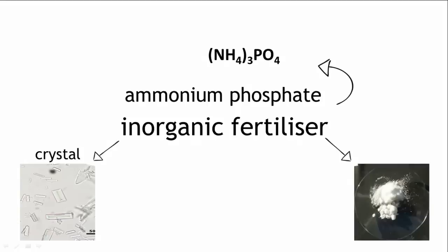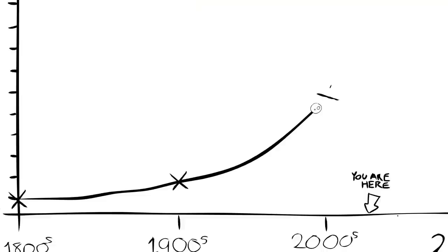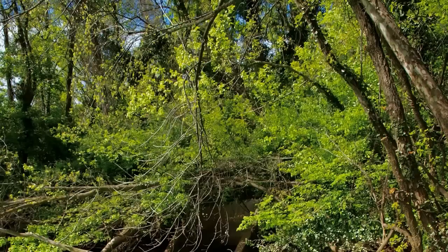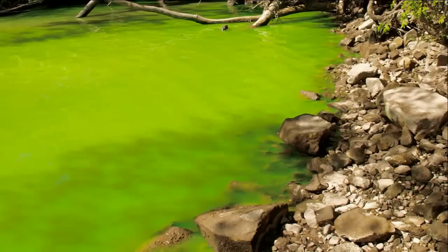Since we learned how to make fertilizers efficiently on a large scale, we've been able to grow many more crops, and therefore the human population has risen dramatically. There can be problems with putting too much fertilizer into a natural system, and some of the problems with fertilizers are explained in other videos.